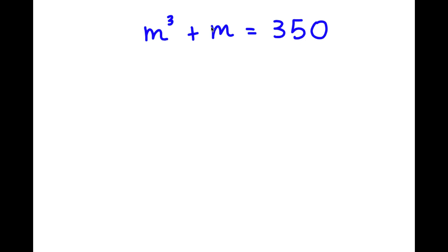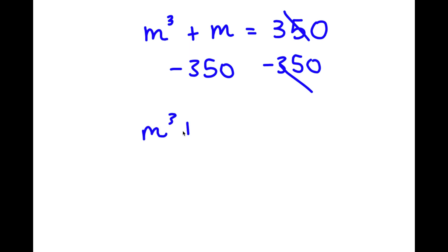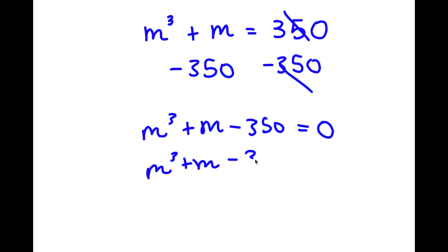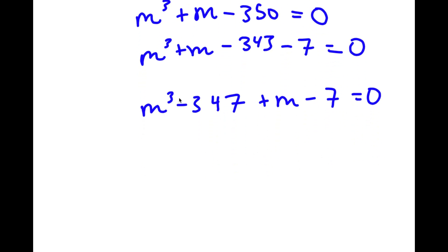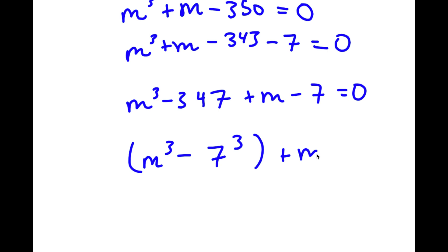In this problem, I have m³ + m = 350. The first thing I'll do is subtract 350 from both sides. This gives m³ - 343 + m - 7 = 0, since 343 = 7³ and 350 - 343 = 7. So I have m³ - 7³ plus m - 7 equals 0.